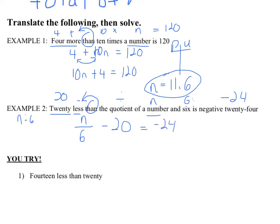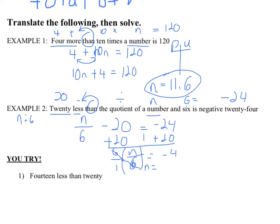Hit pause and solve it. You should have first added 20 to both sides. So n over 6 equals negative 4. Now, this is really important — your work should look exactly like mine. N over 6, we multiply by 6 over 1. When we multiply those two fractions, the 6 in the numerator and the 6 in the denominator cancel out, leaving just n equals. We also multiply the right side by 6: negative 4 times 6. The answer is n equals negative 24.